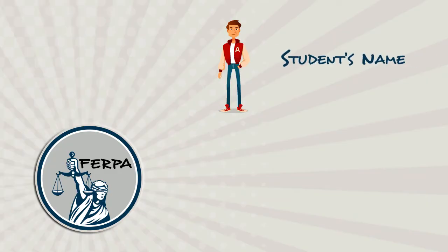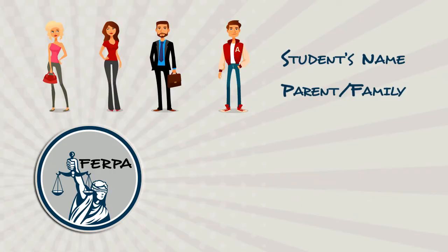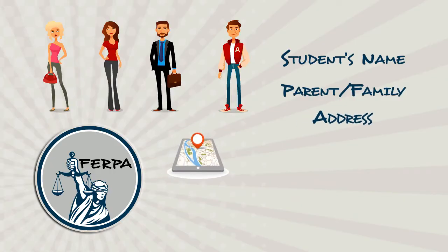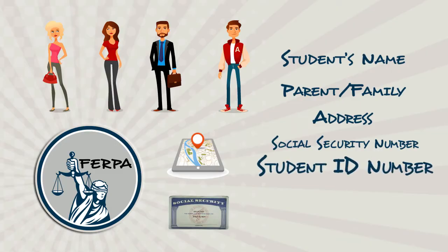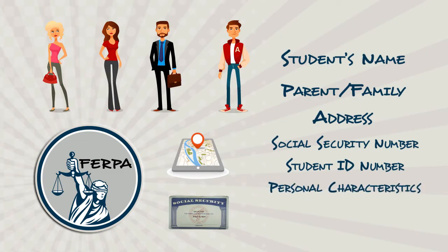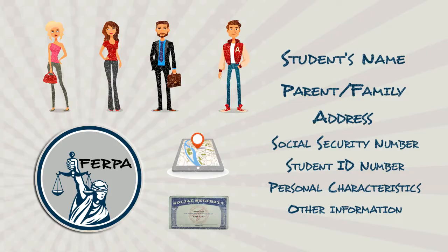Personally identifiable information also includes the name of the student's parent or family members, the student's address, a personal identifier such as the student's social security number or student ID number, a list of personal characteristics that would make the student's identity easily traceable, and other information that would make the student's identity easily traceable.